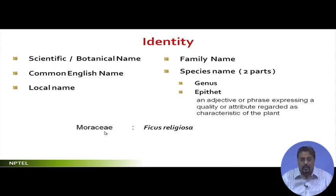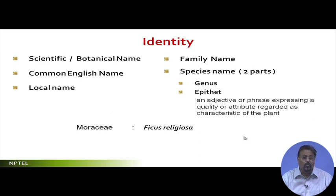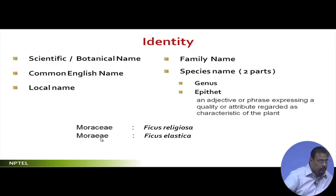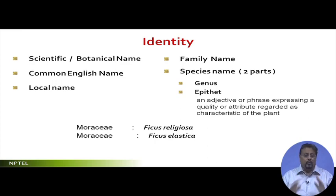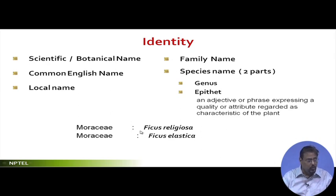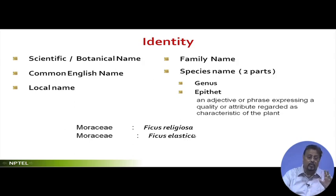If I try to find out what Ficus religiosa's family name is, it is Moraceae. There is also Ficus elastica, which belongs to the same family. Comparing these two: Ficus is the genus common to both plants. The species name has two parts — Ficus is the first part, religiosa is the second part for one, and elastica for the other. Both belong to the same family.